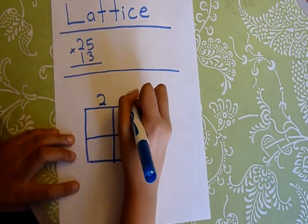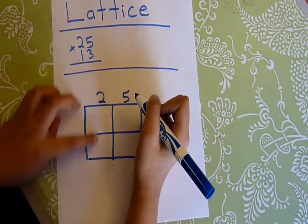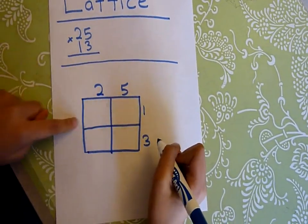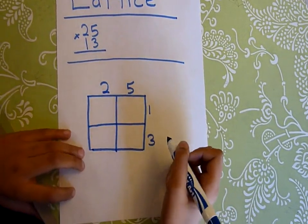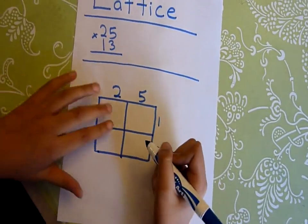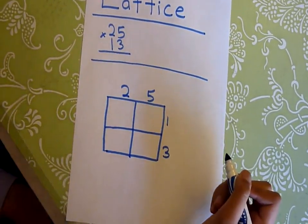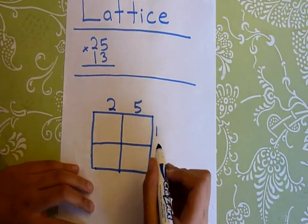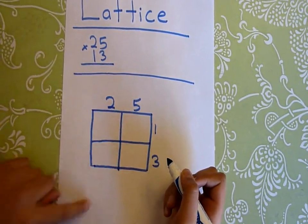Now we're almost set. We need to put the number 25 up here and it has to match, and then you have to put 13 right here, it has to match this way. Now we're really almost done forming the problem. We need to split the boxes in two parts diagonally, so you do that. Now we're done, we can start solving.